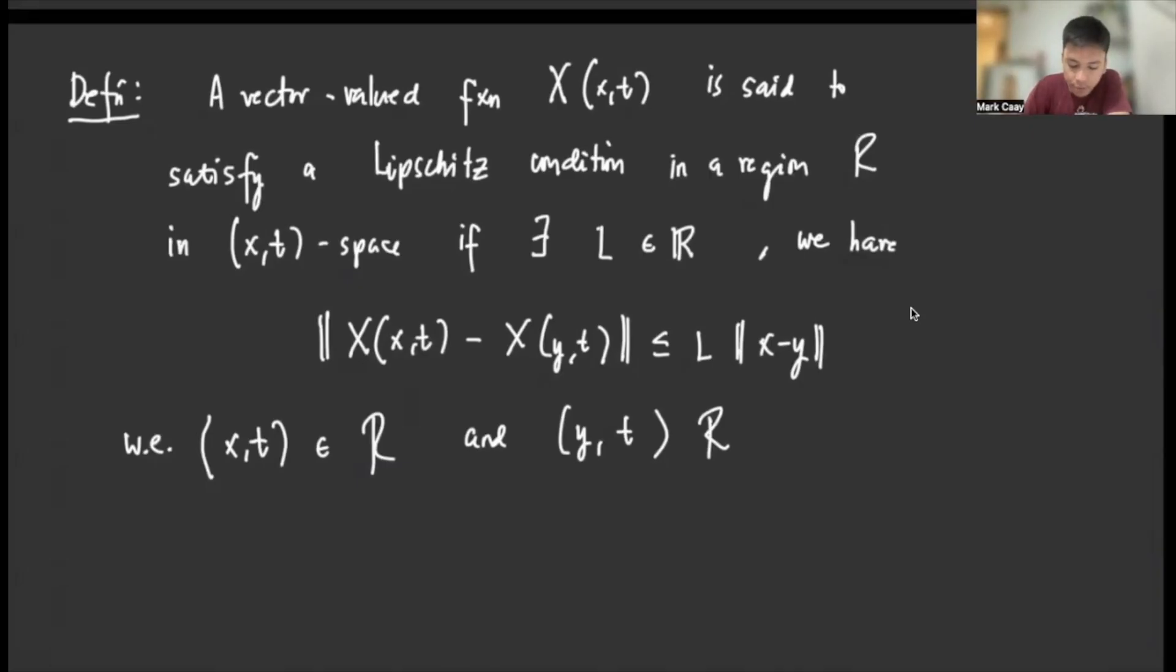Okay, so let's start now. Let's start here with the first definition. A vector-valued function, and we denote this vector-valued function here, and this function is said to satisfy a Lipschitz condition in a region R in (x,t)-space, if for some constant L, this one here, we have this inequality satisfied.